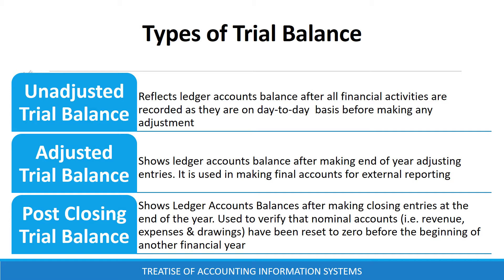An adjusted trial balance shows ledger account balances after making end of year adjusting entries. The adjusted trial balance is used for making final accounts for external reporting. A post-closing trial balance shows ledger account balances after making closing entries at the end of an accounting period. It is used to verify that nominal accounts — that is, accounts for revenue, expenses, and drawings — have been reset to zero before the beginning of another financial year.